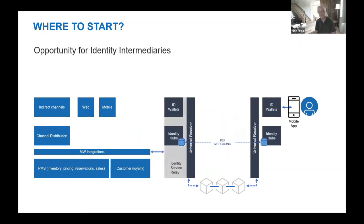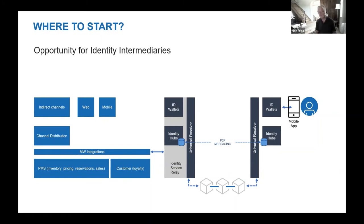There is still a potential role for intermediaries in the P2P commerce world, at least in the short to medium term. The intermediary takes on the role of an identity service relay, but very importantly the identity service relay does not need to provide, own, or store any information about the customer. The ID service acts as a relay between two parties, enabling peer-to-peer commerce for travel providers who may not yet be ready to directly integrate decentralized digital ID technologies into their existing technology stacks.